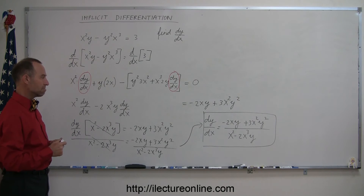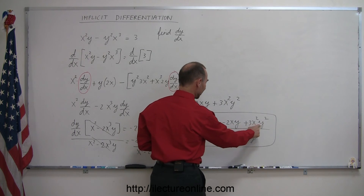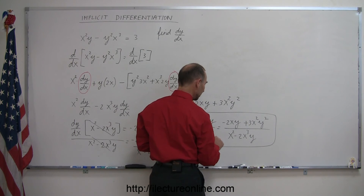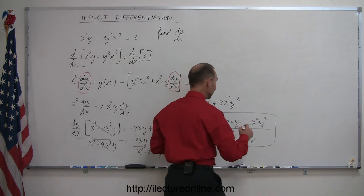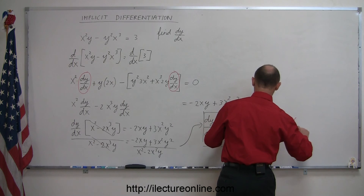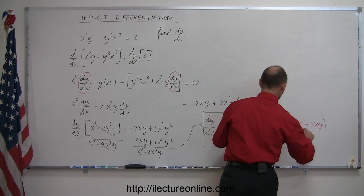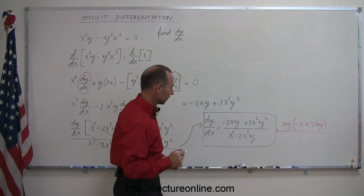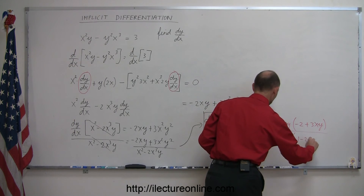As was pointed out to me, I can simplify this. If I look at the numerator, I can factor out a y and factor out an x. If I look at the denominator, I can factor out an x squared. So factoring out x and y from the numerator leaves x times y times the quantity minus 2 plus 3xy, and factoring x squared from the denominator leaves x squared times the quantity 1 minus 2xy.